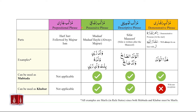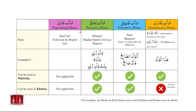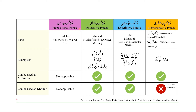We briefly mentioned that murakkab-e-jaari involves the use of harf-e-jaar. Since we are dealing with harf, the concept of definite versus indefinite is not directly applicable. However, murakkab-e-jaari or prepositional phrase can be used in jumla-ismiyah. In this lecture, we will study how murakkab-e-jaari can be used in jumla-ismiyah.